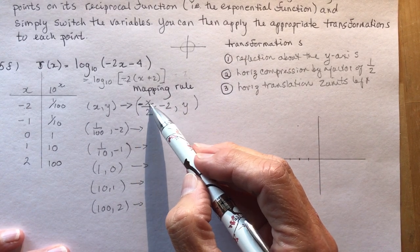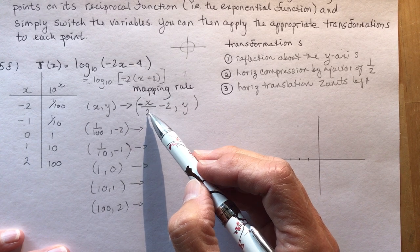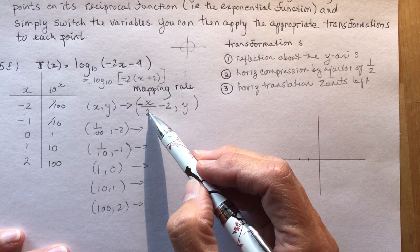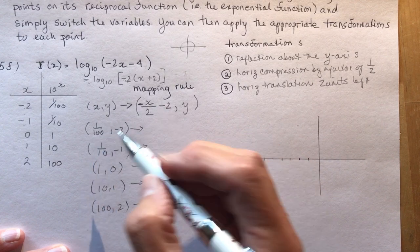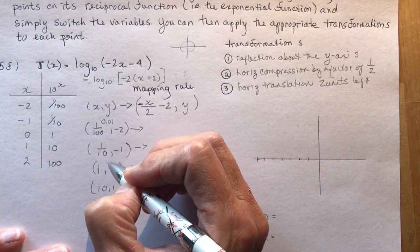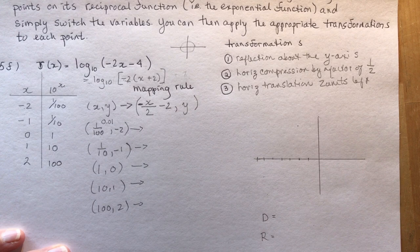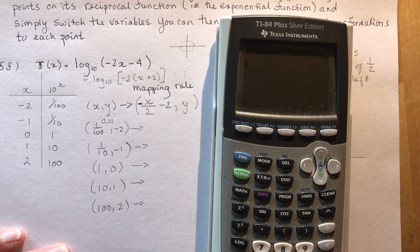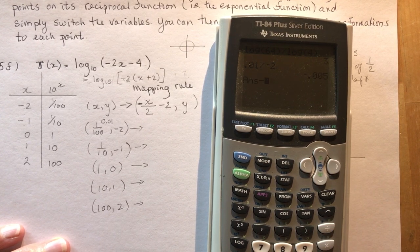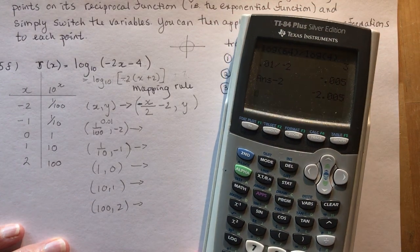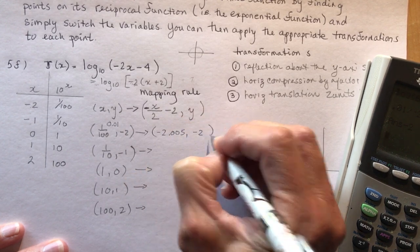So minus X over 2, and my X is 1 over 100. So I have 1 over 100 divided by 2. Well, you could put this as a decimal. That might make things a little easier for you. So you could say this is 0.01, and then just divide that by 2, and subtract 2. So let's do that on a calculator. So 0.01 divided by negative 2, subtract 2, and I get minus 2.005. Minus 2.005, and I do nothing to the Ys.